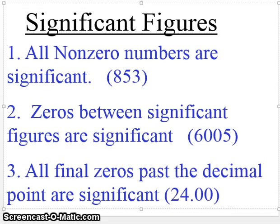Welcome. This will be video 1.2 over something called significant figures. In chemistry, we actually have to worry about how we report our numbers. In math, you do not have to worry about this — you can put as many numbers down as the calculator tells you. Here, we cannot do that, because our numbers come from measurements. We're going to look at this idea of significant figures. There are five rules that we'll quickly go through and then do some examples.